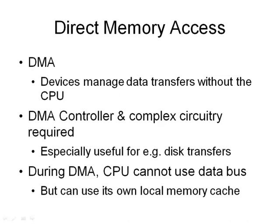An important issue for I/O speed is direct memory access (DMA). With DMA, devices can manage data transfers without the CPU having to be in charge. For example, moving data between main memory and a disk drive normally keeps the CPU busy through the whole process. With DMA, the CPU can initiate the transfer but then do its own work, while a separate DMA controller and additional circuitry handle the transfer instead.